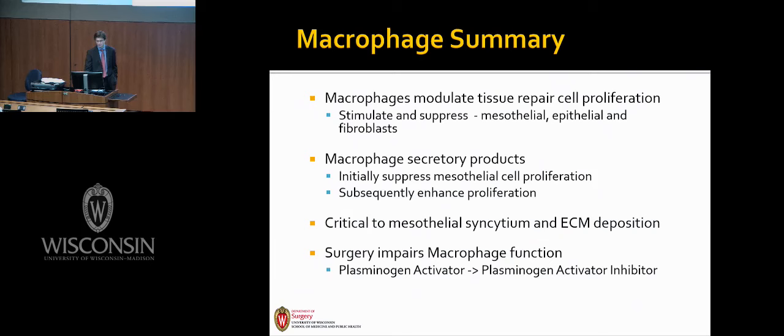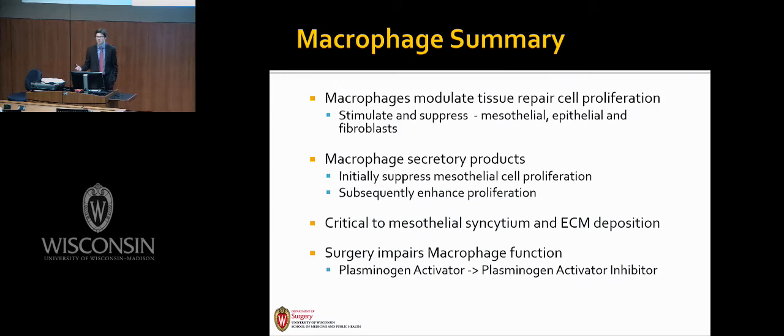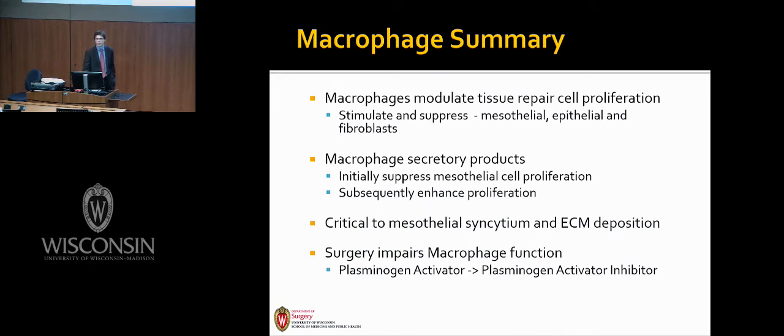The story of adhesions is effectively one of the peritoneal macrophage: the macrophage can modulate tissue repair cell proliferation, stimulating and suppressing repair cells. It initially suppresses mesothelial cell proliferation and subsequently enhances this proliferation. It is critical to the redevelopment of syncytium and extracellular matrix. And surgery itself impairs macrophage function via the plasminogen activator and inhibitor axis.